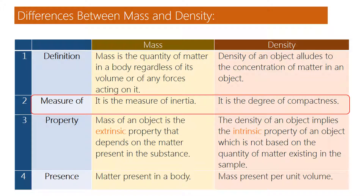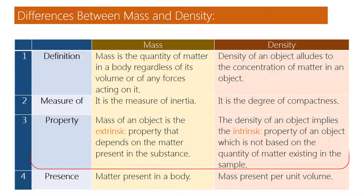Measure of mass: it is the measure of inertia. Measure of density: it is the degree of compactness. Property of mass: the mass of an object is an extrinsic property that depends on the matter present in the substance. Property of density: the density of an object implies an intrinsic property of an object, which is not based on the quantity of matter existing in the sample.